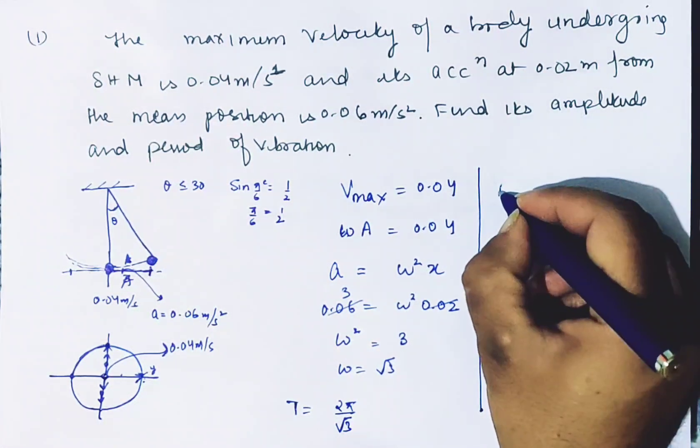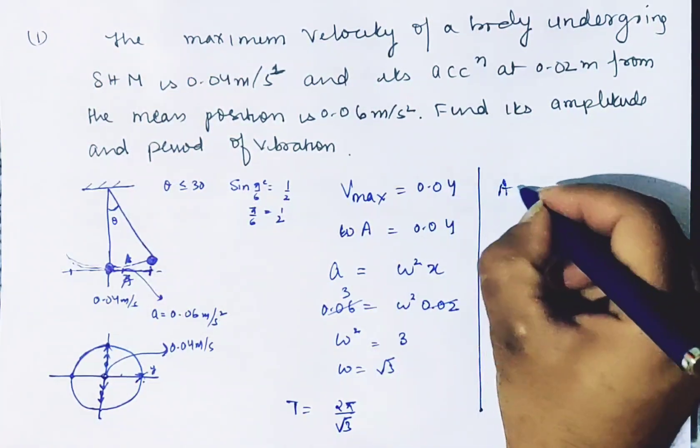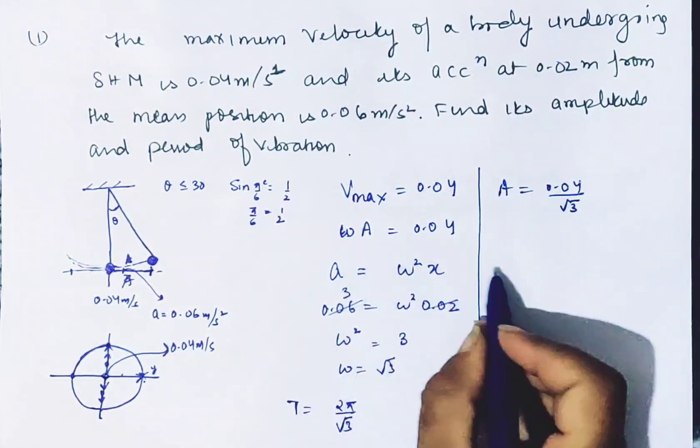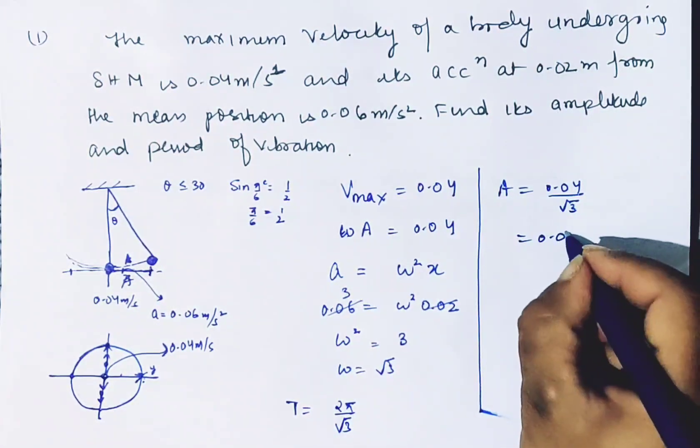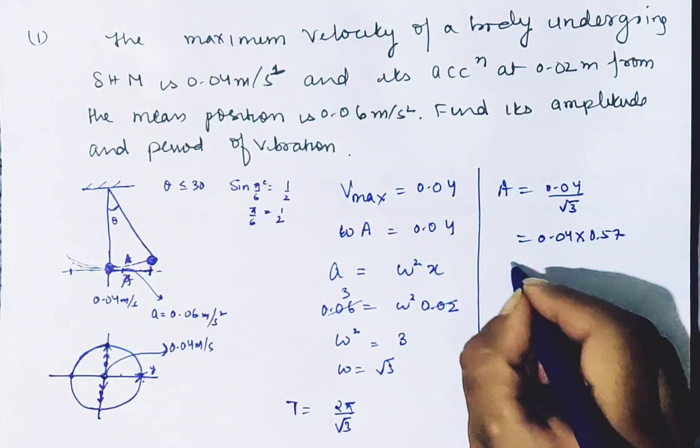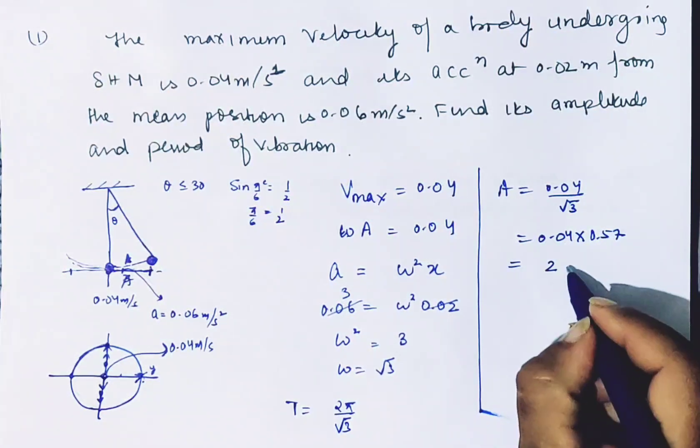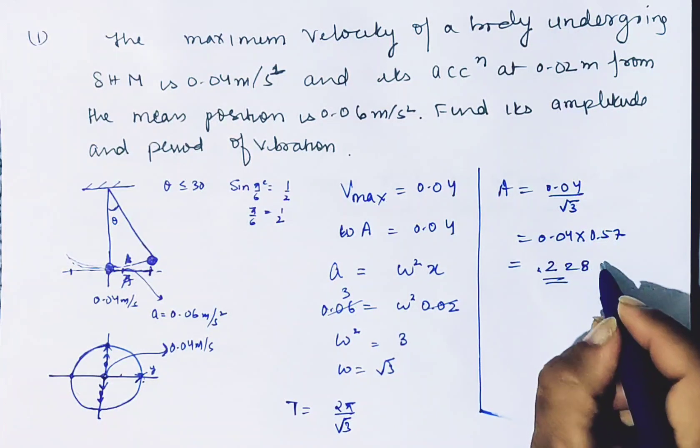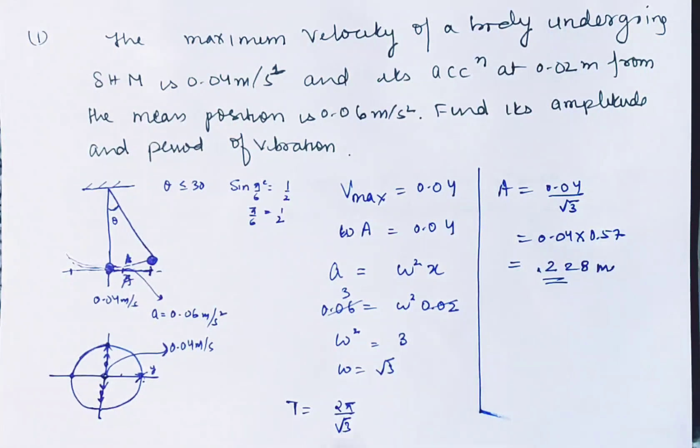And the amplitude, you can calculate from here: 0.04 divided by root 3, where omega is root 3. So 0.04 times 1 by root 3 is 0.023, so the amplitude is 0.023 meter. The time period is 2 pi by omega. So that is the answer to the question.